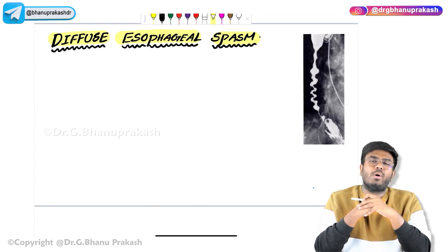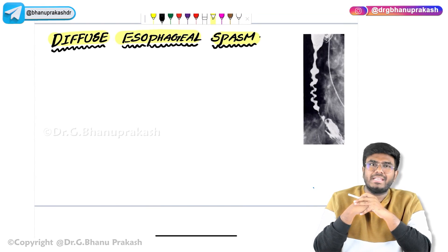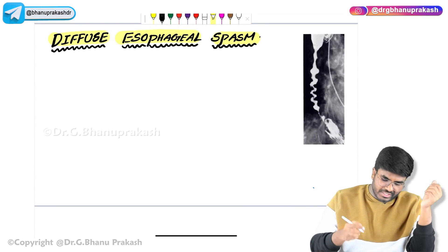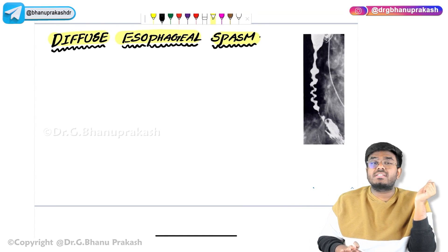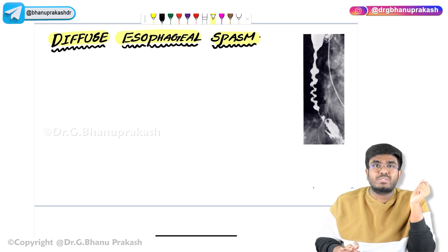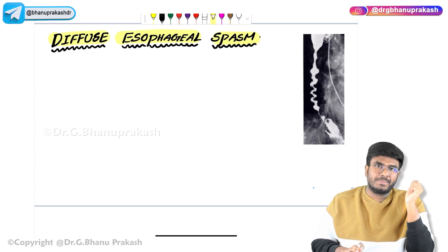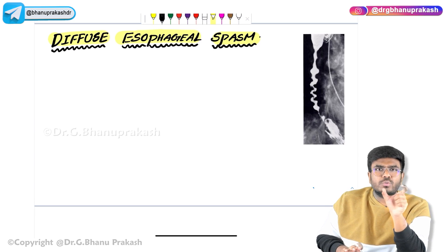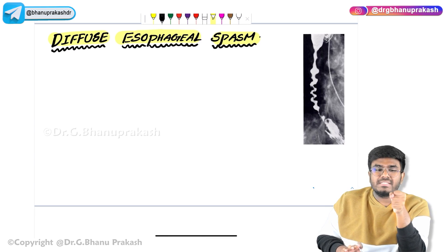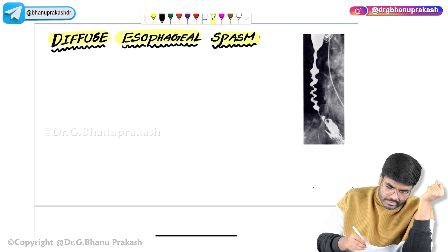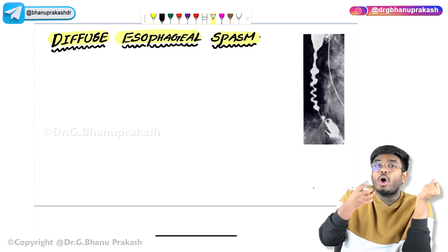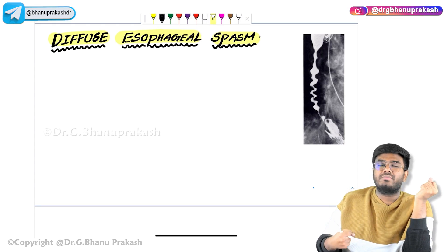Welcome back. After achalasia cardia, let's continue with the other esophageal disorders. The esophageal disorder I'm going to discuss now is called DES — Diffuse Esophageal Spasm. The name itself says it: diffuse means throughout the esophagus, there is spasm, meaning abnormal contractions are going to be seen.